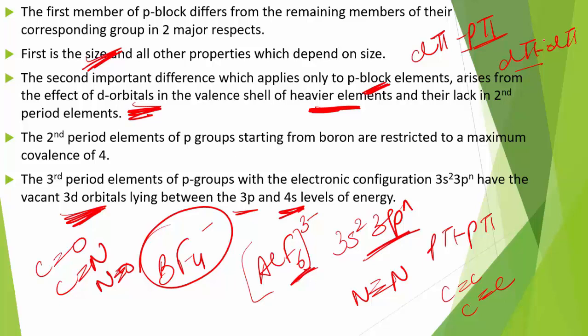Since d-orbitals are of higher energy than p-orbitals, they contribute less to the overall stability of a molecule compared to p-pi, p-pi bonding of second-row elements. D-orbitals contribute less to stability than p-orbitals in pi bonding.